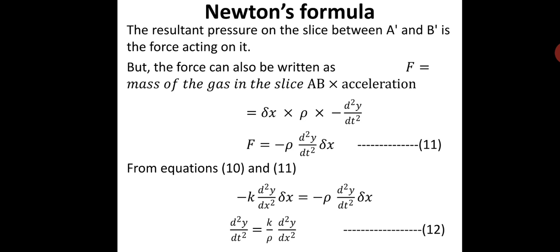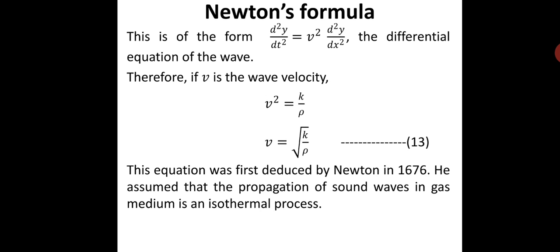Therefore force equals delta-x times rho times minus d²y/dt², giving equation 11: minus rho times d²y/dt² times delta-x. Comparing equations 10 and 11: minus K times d²y/dx² times delta-x equals minus rho times d²y/dt² times delta-x. The delta-x terms and minus signs cancel, yielding d²y/dt² equals K/rho times d²y/dx² — equation 12. This matches the standard differential wave equation d²y/dt² equals v² times d²y/dx², which we derived in the previous session.